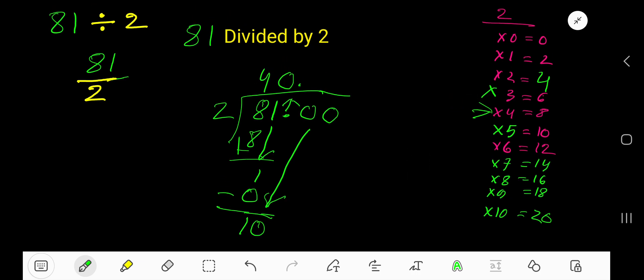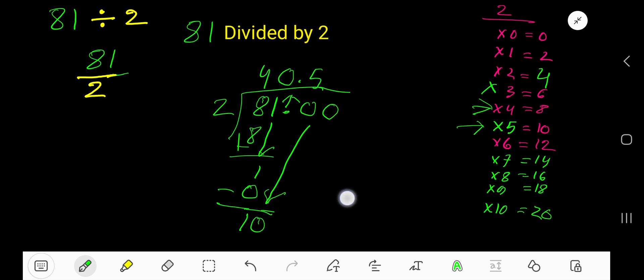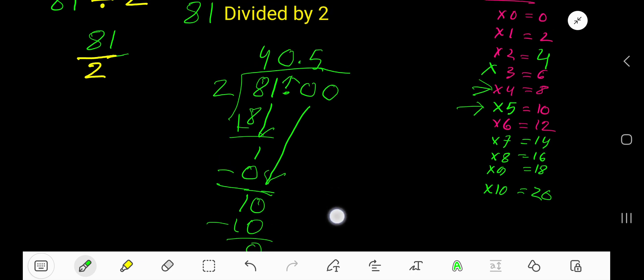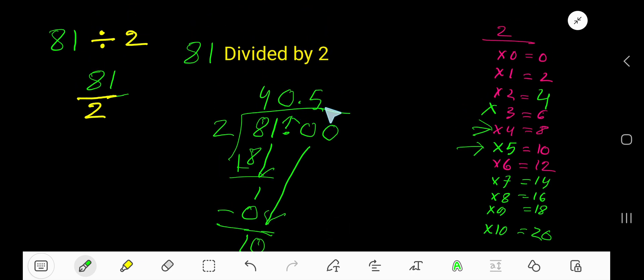how many times? Look, 5 times 10. Write 5 here. 5 times 2 is 10. If you subtract, you are getting 0. So your answer is 40.5.